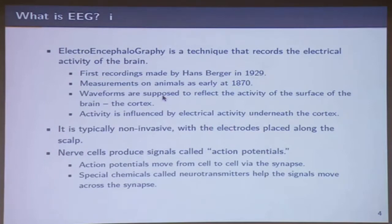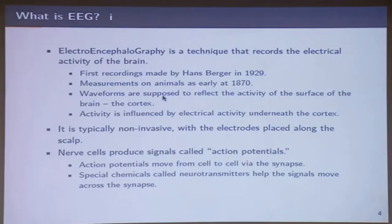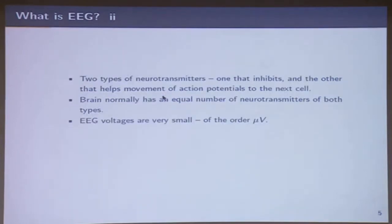There's something called an ECOG which is actually placed underneath the scalp, whereas EEG electrodes are placed along the scalp. When you go to a clinic, they apply some gel and make it sit on your head — just like dry solder — to ensure it's not having really high impedance and that all electrodes are active. Nerve cells in the brain produce action potentials, which move from cell to cell via the synapse. Special chemicals called neurotransmitters help signals move across the synapse. EEG voltages are generally very small — of the order of microvolts — which is also a problem.